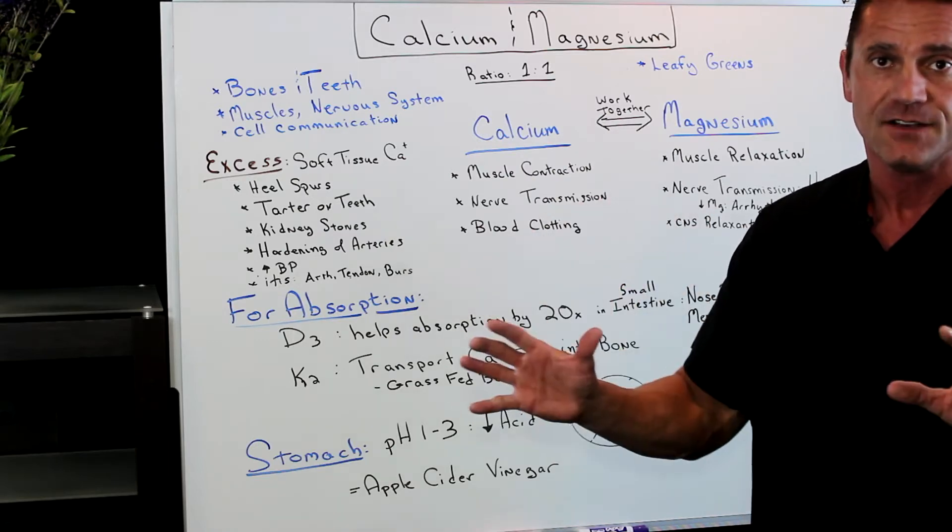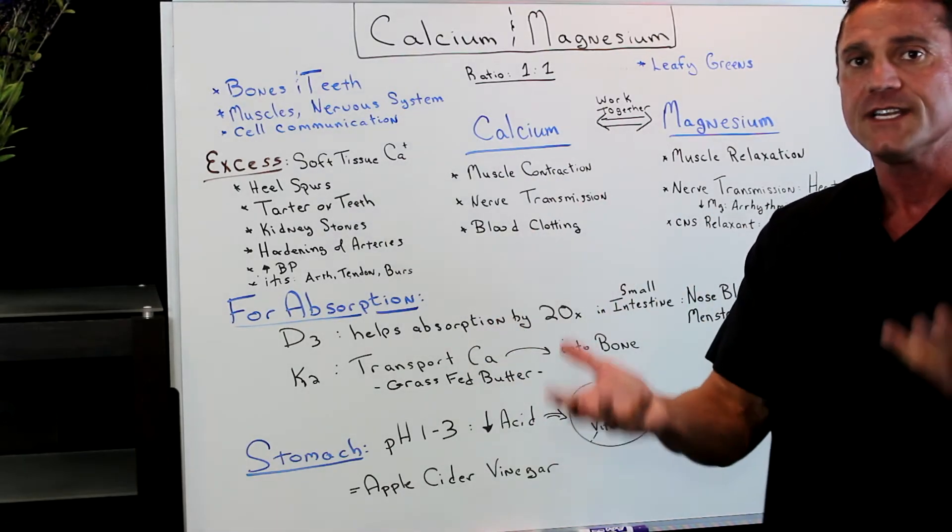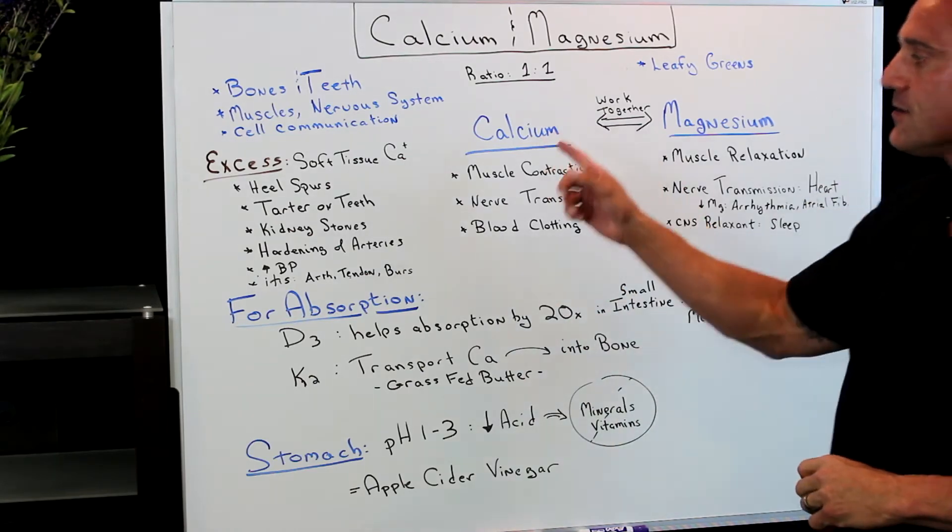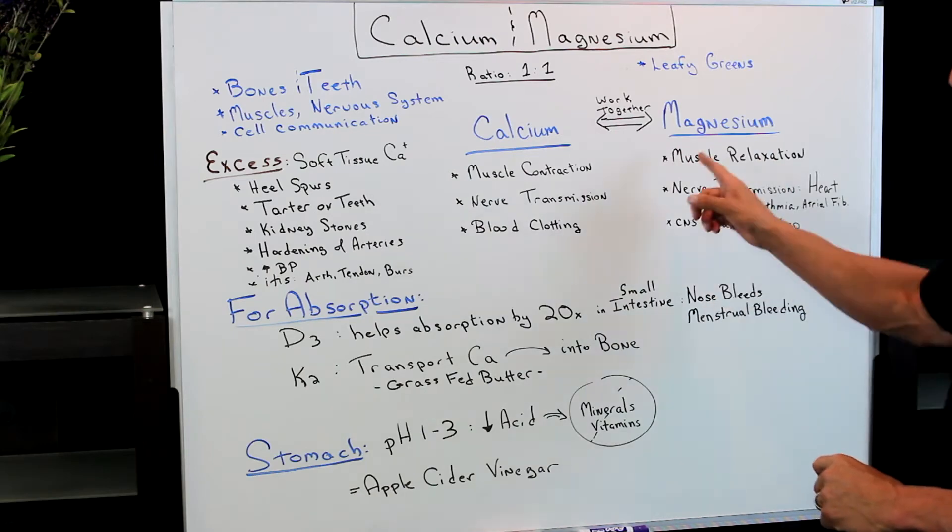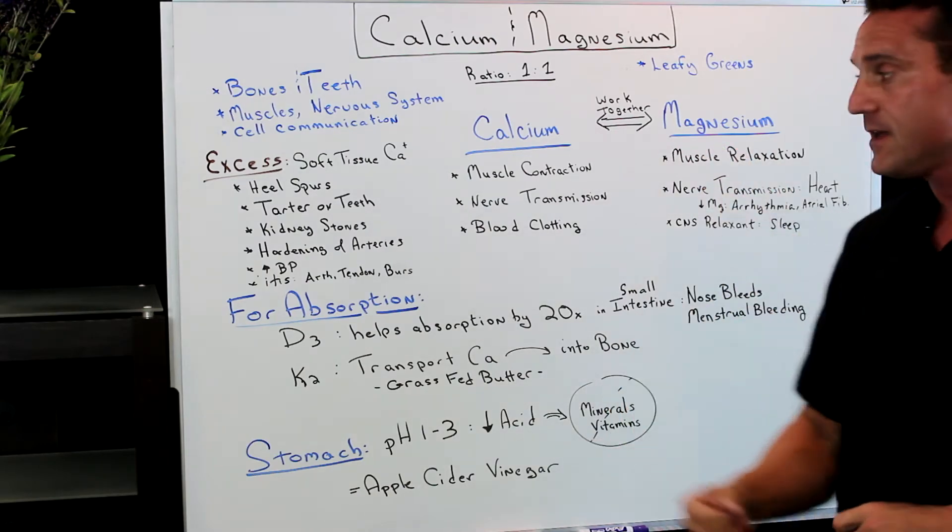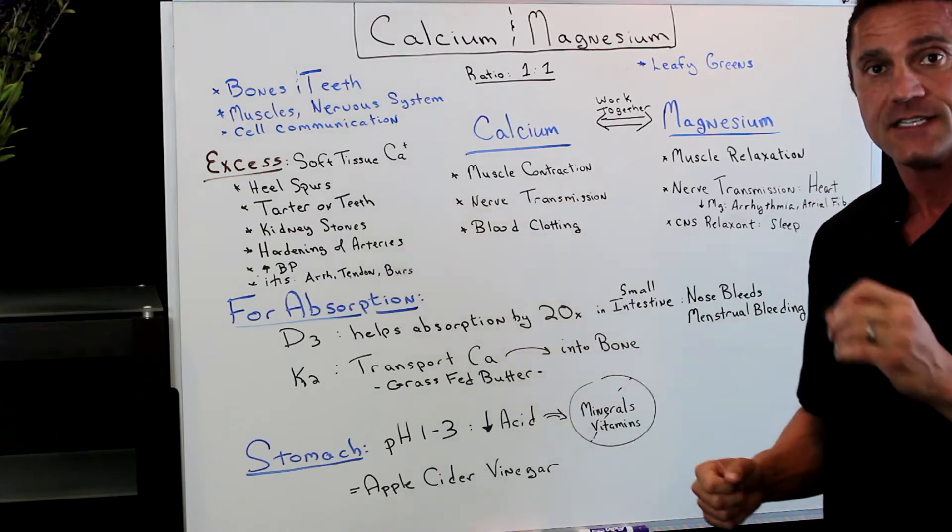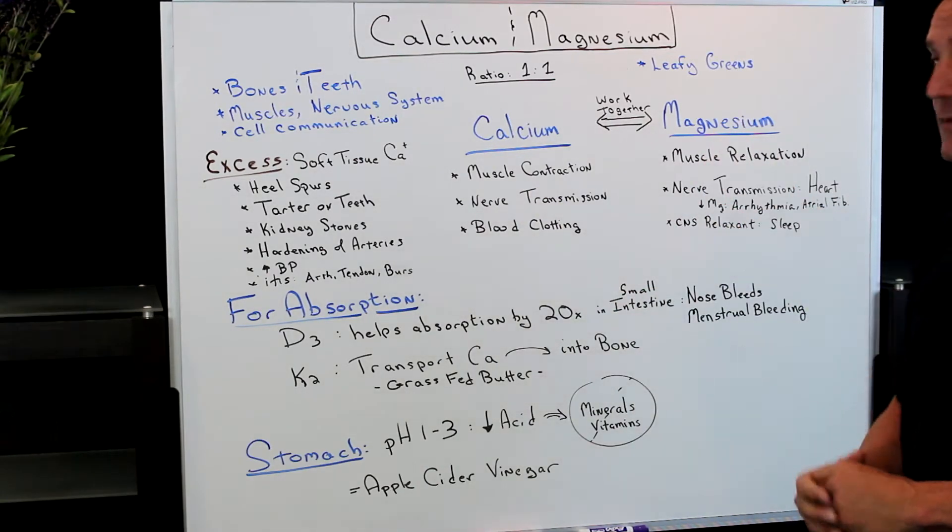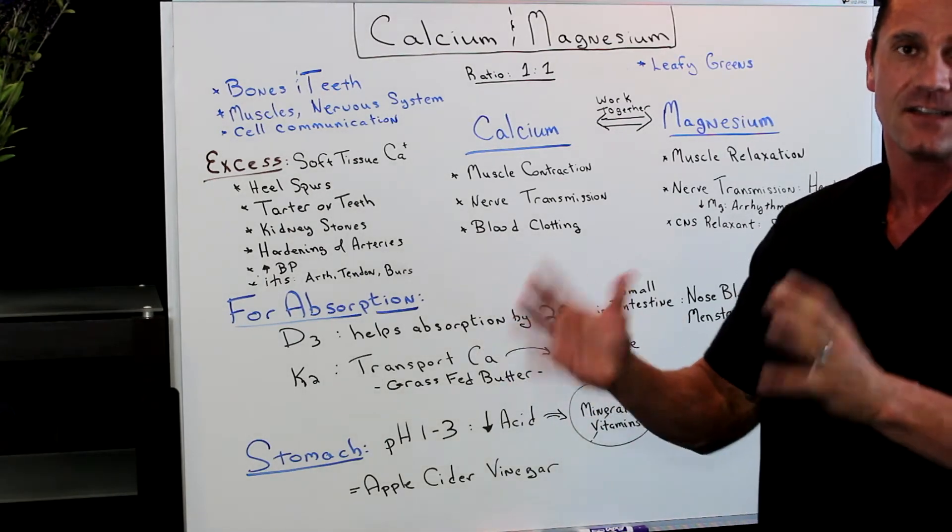You may be taking just enough calcium, but the problem is not enough magnesium. They work together because we all know calcium is involved in muscle contractions, while magnesium is actually helpful in muscle relaxation. Calcium is involved with nerve transmission, where magnesium is involved with nerve transmission but mainly targets the heart.